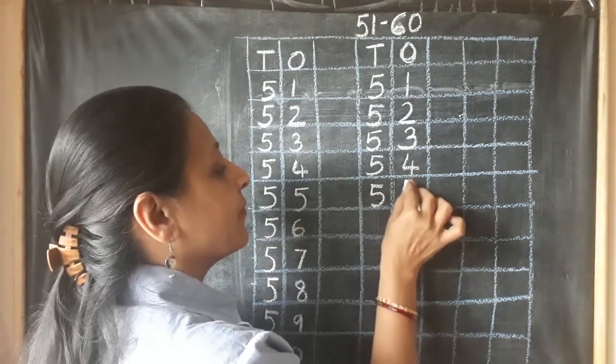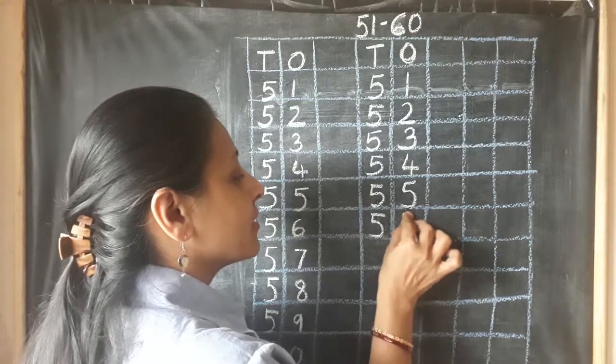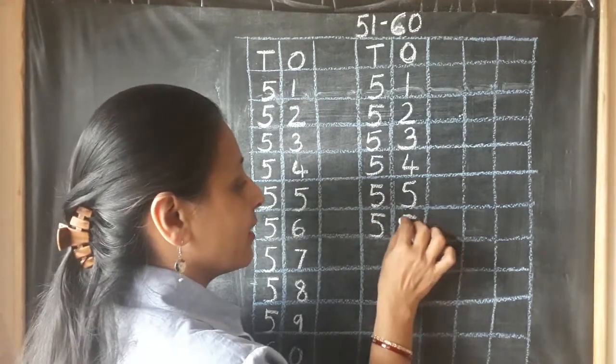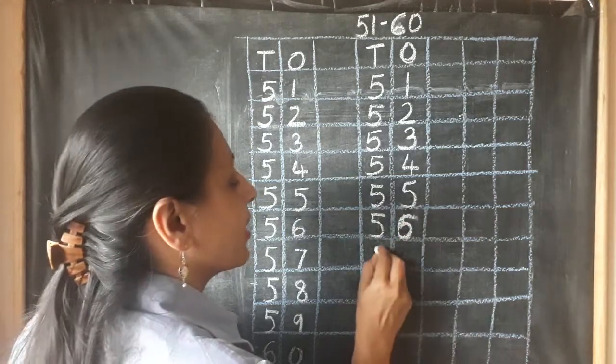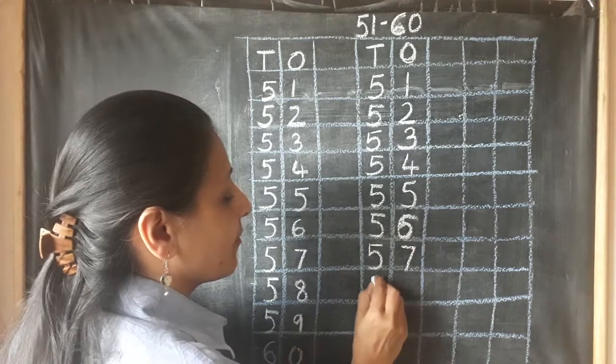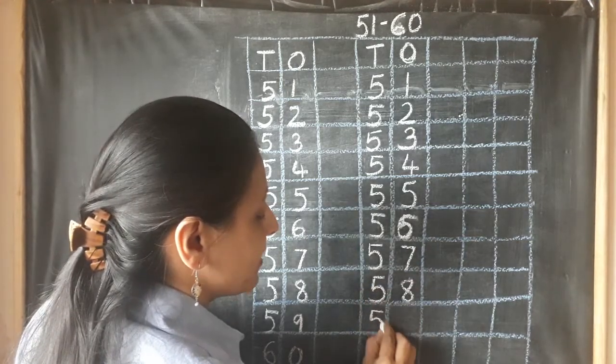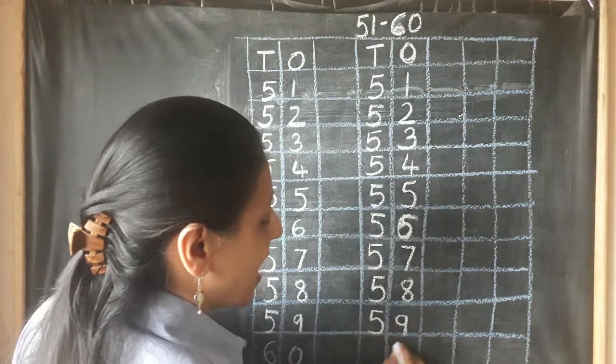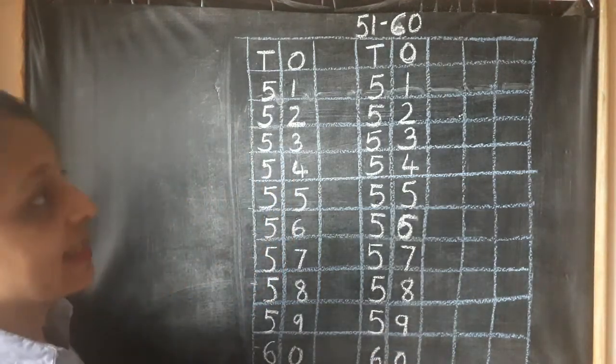5, 5, 55. 5, 6, 56. Sorry, 5, 6, 56. Ma'am has made a mistake. Okay. 5, 7, 57. 5, 8, 58. And 5, 9, 59. And 6, 0, 60.